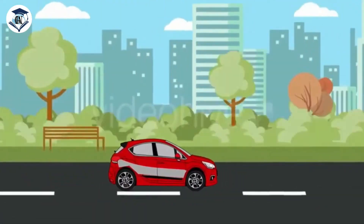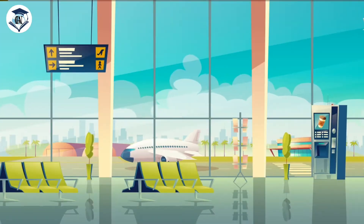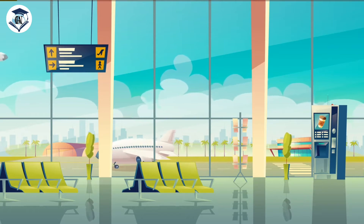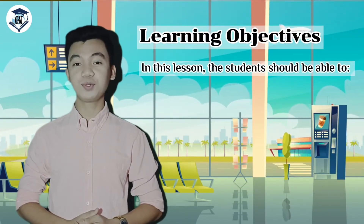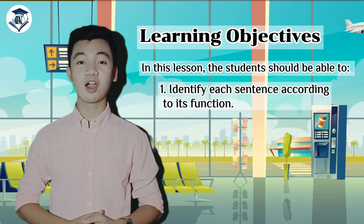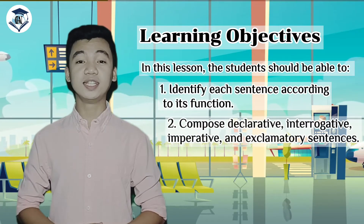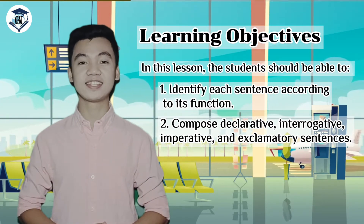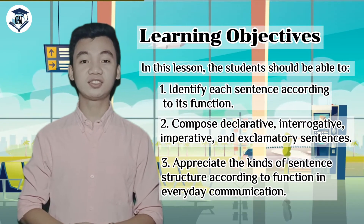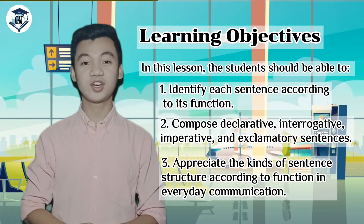Come with me, and let us all go to the airport. On behalf of the crew, ladies and gentlemen, may I ask you to please pay attention as we provide the learning objectives for today's lesson. In this lesson, the student should be able to: first, identify each sentence according to its function; compose declarative, interrogative, imperative, and exclamatory sentences; and appreciate the kind of sentence structure according to its function in everyday communication.